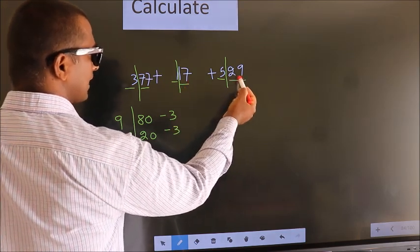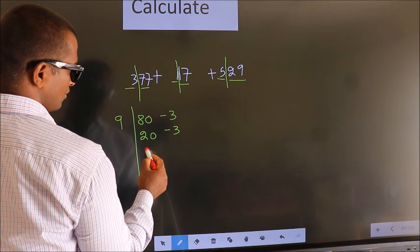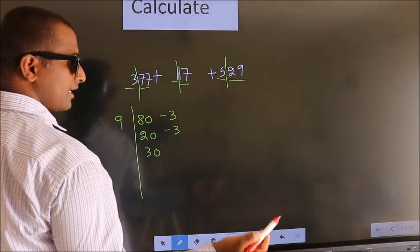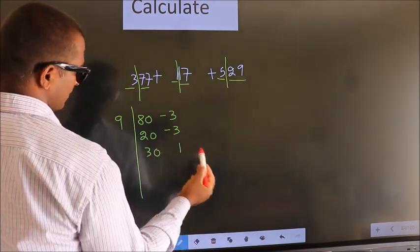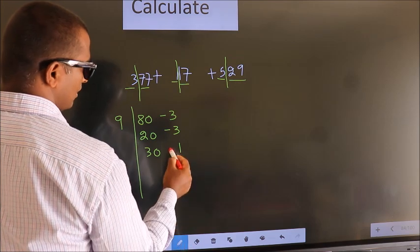Next number, 29. 29 is close to 30 and less by 1. Since less, we should put negative symbol.